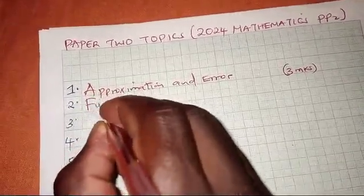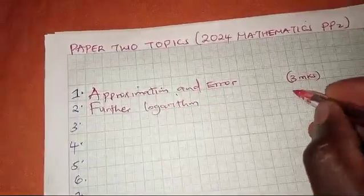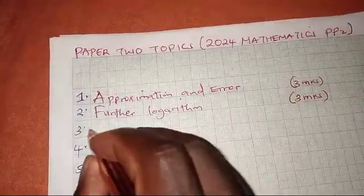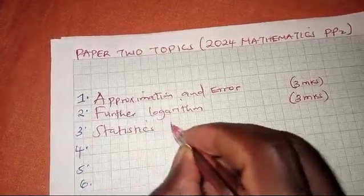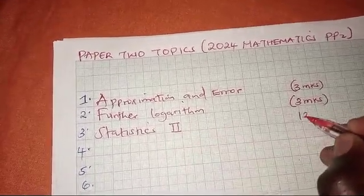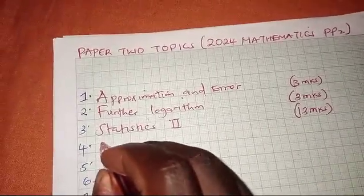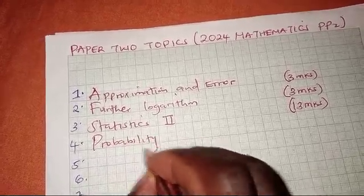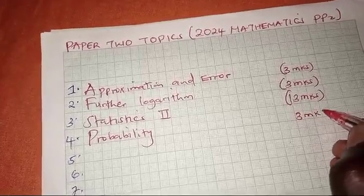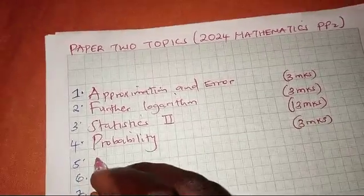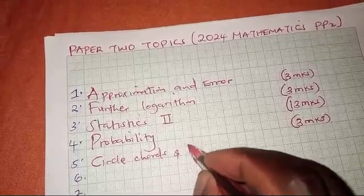The second topic is logarithm, carrying three marks. The next one is statistics, which will carry a total of 13 marks — that is three marks in section A and ten marks in section B. The next one is probability, which will carry three marks.